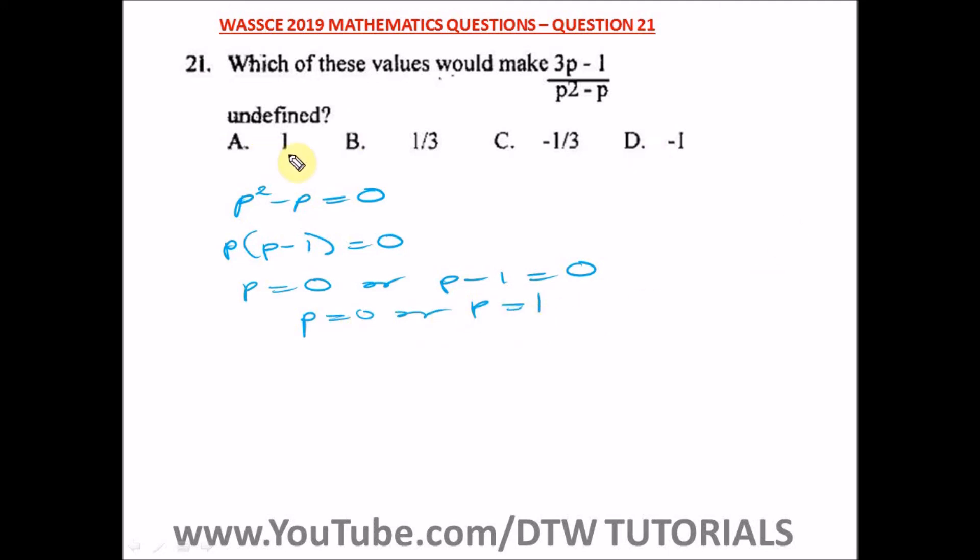All right, so from our answer we have one of the values of p here which is one. So our right option here is option A. P equal to one will make this particular algebraic expression undefined, and our right option here is option A, which is one.